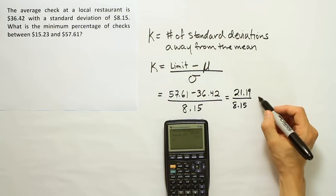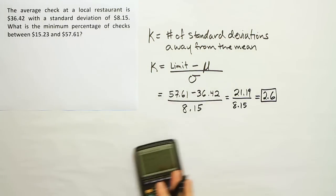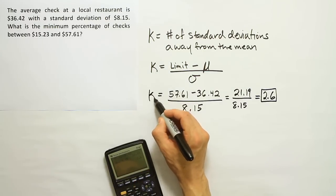And when I do that, I get the result 2.6. Now that would be my K, that would end up being my K in this problem.